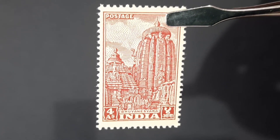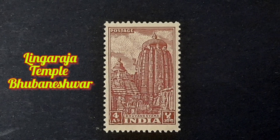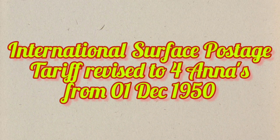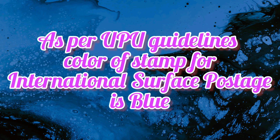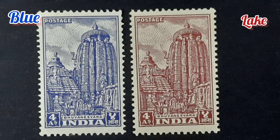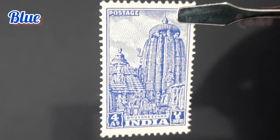The next stamp is the four anna stamp. The image depicted here is the famous Lingaraja Temple, the largest Shiva temple in the city of Bhubaneswar. It stands as a testimony to Kalinga architecture and was built during the 6th century AD. The tariff for international service postage was later changed from three and a half annas to four annas, effective 1st December 1950, as per Universal Postal Union guidelines. Since international service stamps should be in blue color, the color of the four anna Lingaraja Temple stamp was changed from lake to blue.